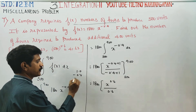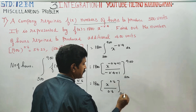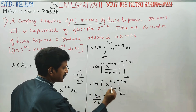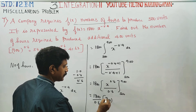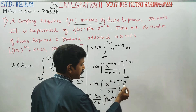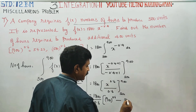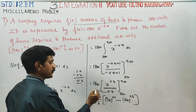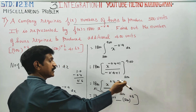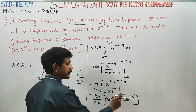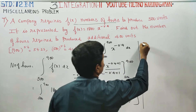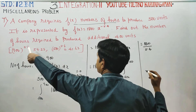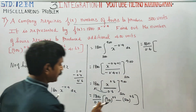So we have 1800 divided by 0.6, with limits 500 to 900. Substituting the upper limit: 900 to the power 0.6, minus the lower limit: 500 to the power 0.6. Substituting: 1800 divided by 0.6 into 900 to the power 0.6.